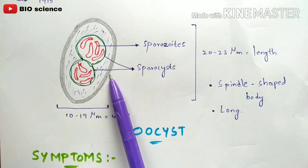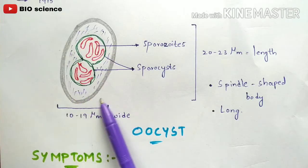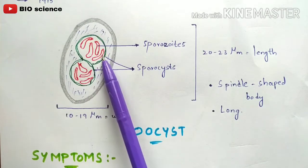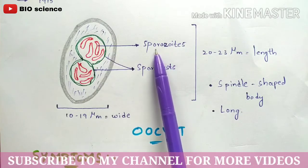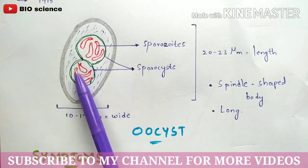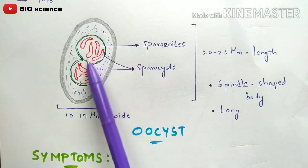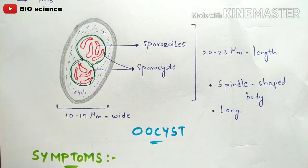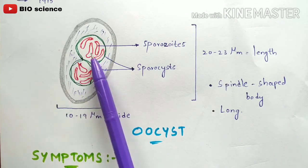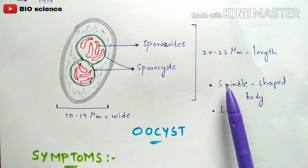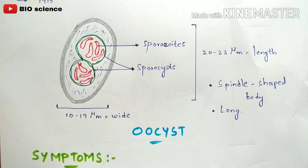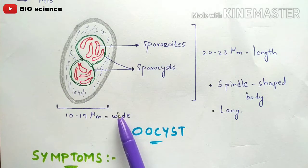The diagram I have drawn is the mature oocyst of Isospora belli. Inside the oocyst there are two sporocysts — the green colored structures I have drawn. Each sporocyst contains four sporozoites, shown in red, giving a total of eight sporozoites per oocyst. The oocyst is spindle shaped, with a length ranging from 20 to 23 micrometers and a width of 10 to 19 micrometers. This is the morphology of the oocyst of Isospora belli.